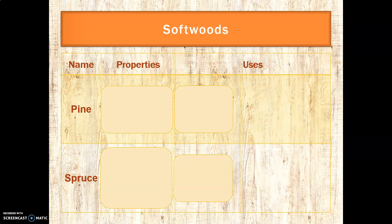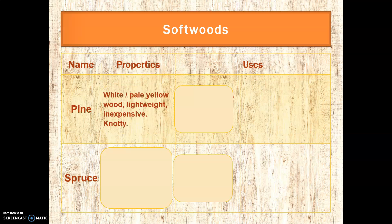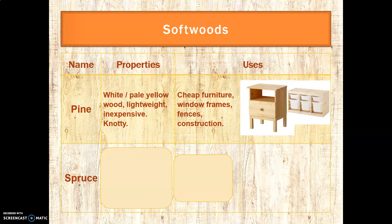Now on to the softwoods — we have four of these as well. Pine is a white to pale yellow wood, lightweight and relatively inexpensive. However, it is quite knotty — a knot occurs wherever a branch is fixed into the trunk. It tends to be used for cheap furniture, window frames, fences, and construction. If you see solid-looking wood in IKEA or a local shop, it's probably pine.